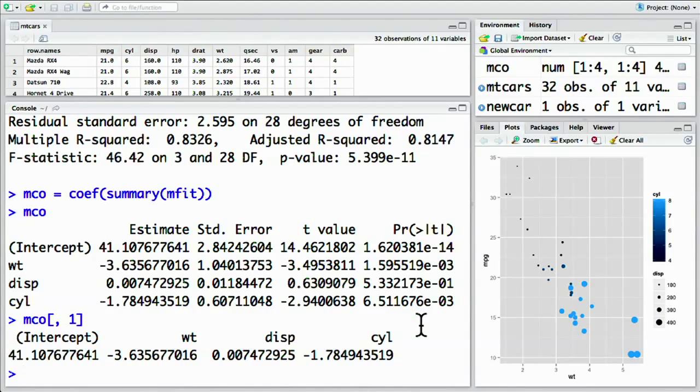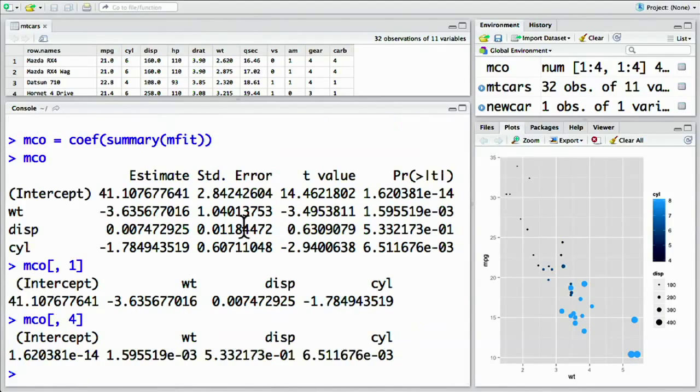We can also get the significance of each, the p-value of each, in the fourth column of this matrix. The p-values are significant for the intercept, the weight, and the cylinders, but not significant for the volume of the engine.